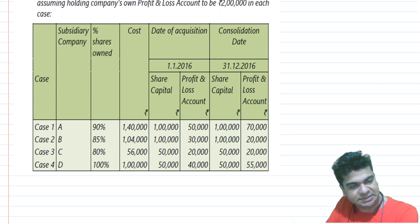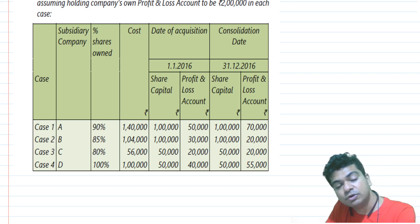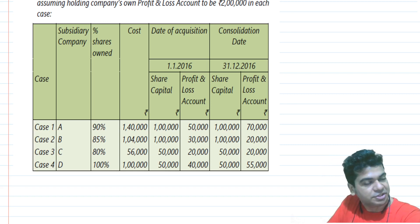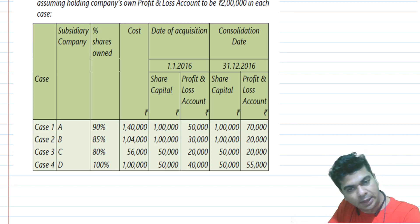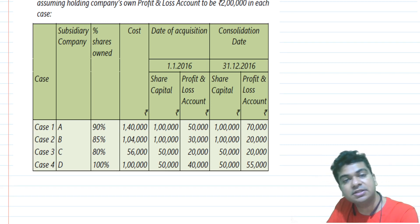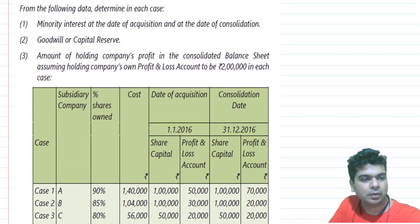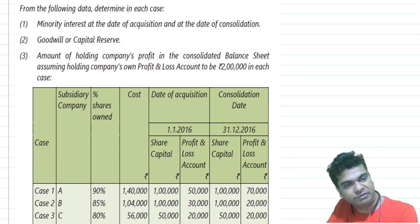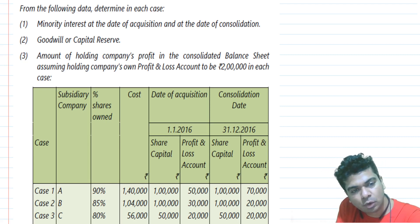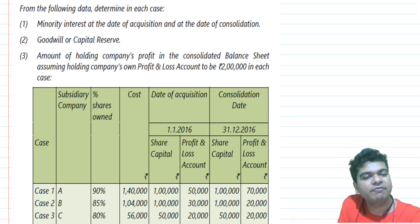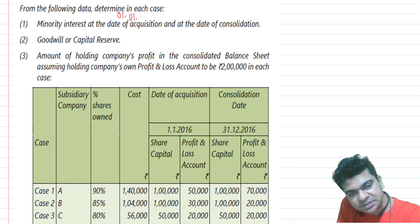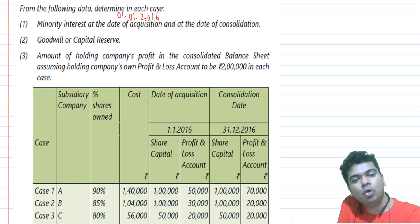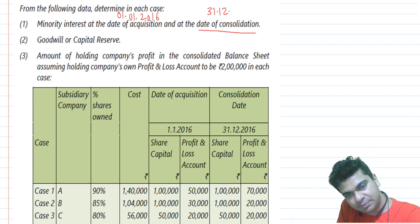The subsidiary company data is given: the percentage of shares owned, the cost of the shares, the date of acquisition which is 1st January 2016, and the consolidation date of 31st December 2016. We have to calculate minority interest on both dates — on the date of acquisition, 1st January 2016, and on the date of consolidation, 31st December 2016.